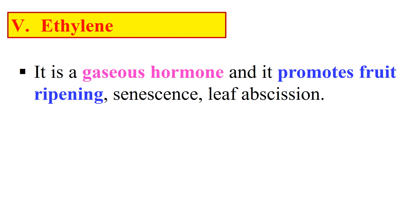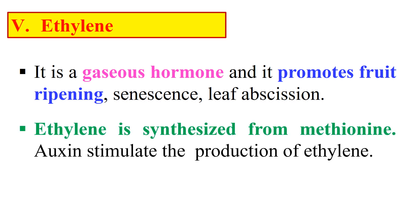Next, ethylene. It is a gaseous hormone and it promotes fruit ripening, senescence, and leaf abscission. Ethylene is synthesized from methionine, and generally auxins stimulate the production of ethylene. So this covers all the plant growth regulators: auxin, cytokinin, gibberellin, abscisic acid, and ethylene — completing our discussion on phytohormones or plant growth regulators.